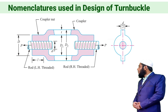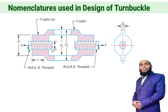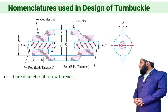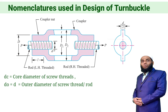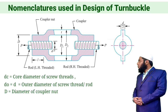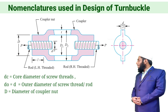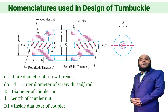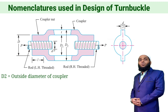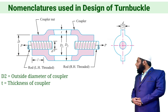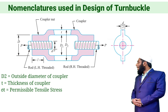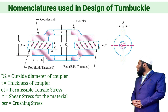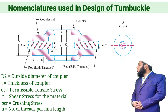These are the important nomenclature for this adjustable screw joint. DC is the core diameter of the screw thread. DO is the outer diameter of the screw thread. Capital D is the diameter of the coupler nut. Small l is the length of the coupler nut. D1 is the inside diameter of the coupler. D2 is the outside diameter of the coupler. Small t is the thickness of the coupler. Sigma t and tau are the permissible stresses in tension and shear. Sigma CR is the crushing stress, and small n is the number of threads.